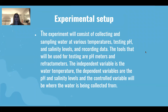The experiment consisted of collecting and sampling water at various temperatures, testing pH and salinity levels, and recording data. The tools used were pH meters and refractometers. The independent variable was the water temperature, the dependent variables were the pH and salinity levels, and the controlled variable was where the water was being collected from.